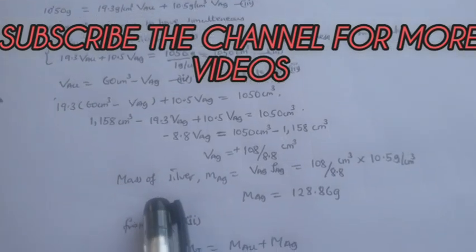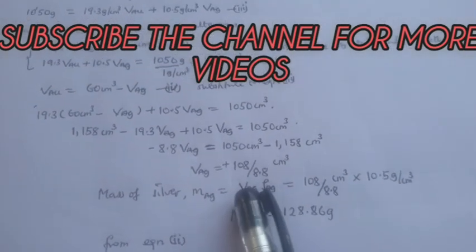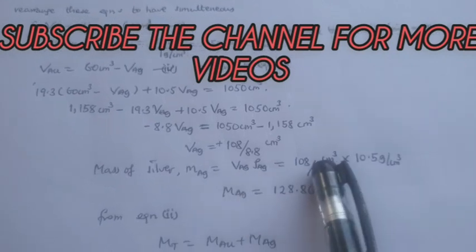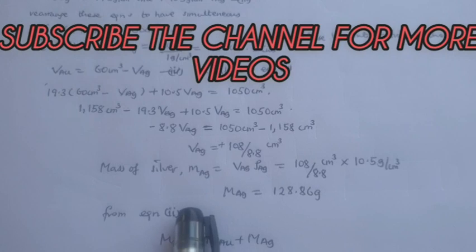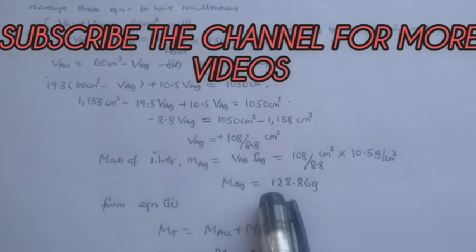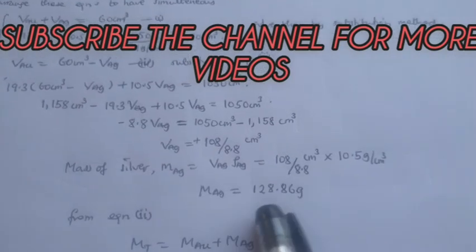We have volume of silver here, the mass times its density. Our mass of silver is equal to 120.86 grams approximately.